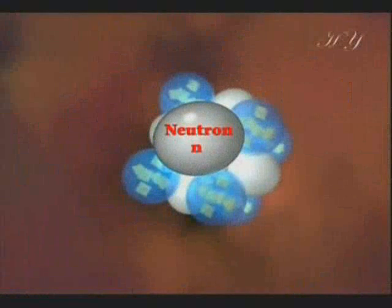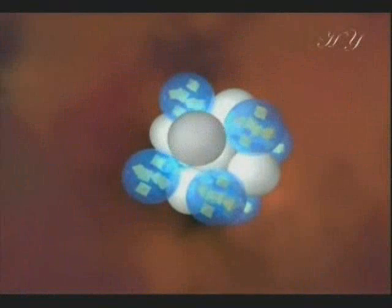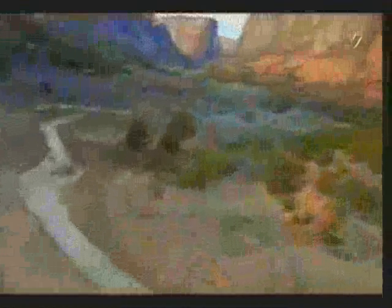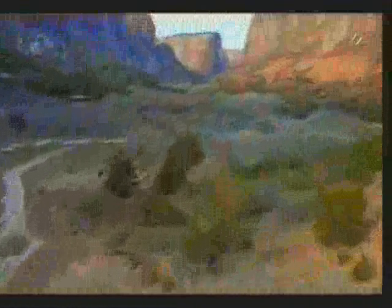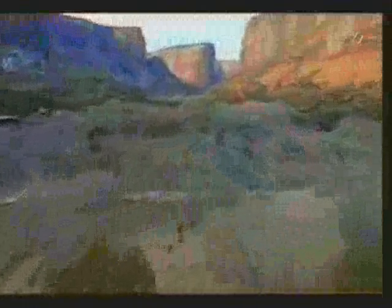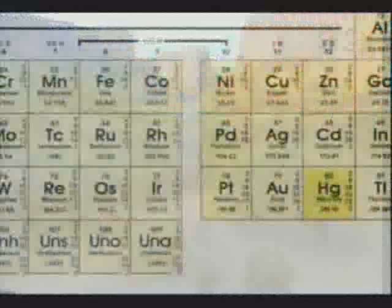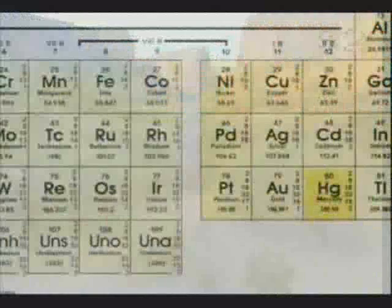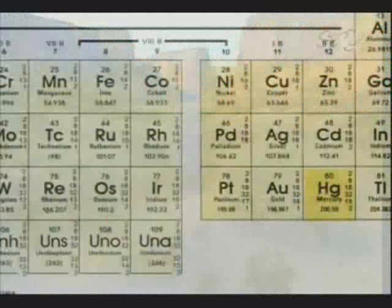The protons and neutrons inside the nucleus of the atom constitute 99.95% of the mass of the atom, and are the source of the variety of elements on earth. There are 109 elements on earth, and some of these elements are very familiar to us.